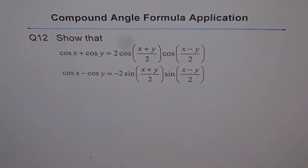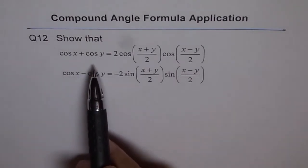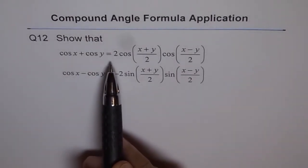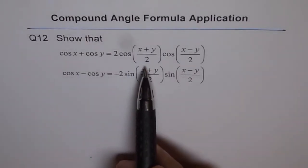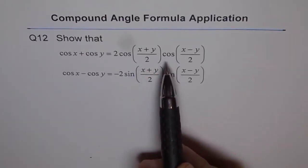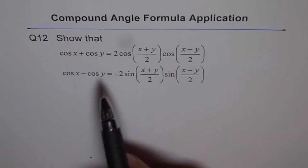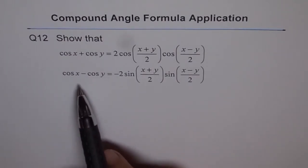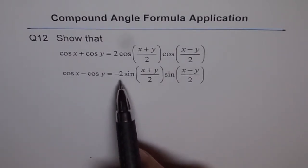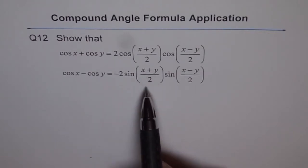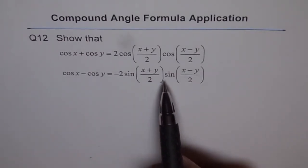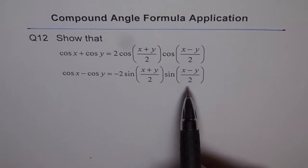Compound angle formula application. Question 12. Show that cos x plus cos y equals 2 cos of x plus y by 2 times cos of x minus y by 2. The second one which is similar to this is cos x minus cos y equals minus 2 sin of x plus y by 2 times sin of x minus y by 2.